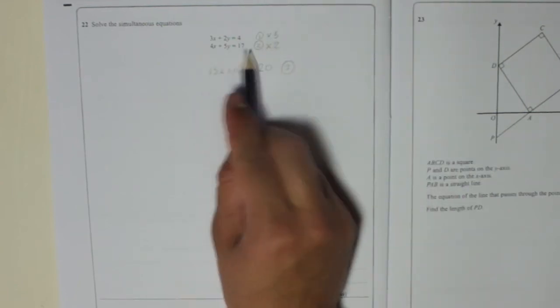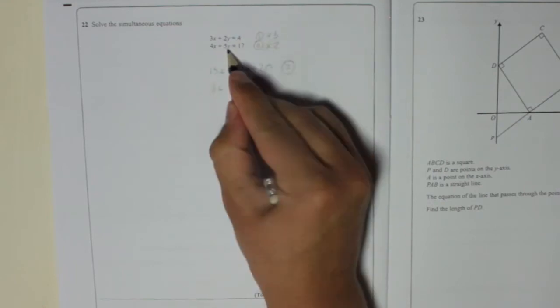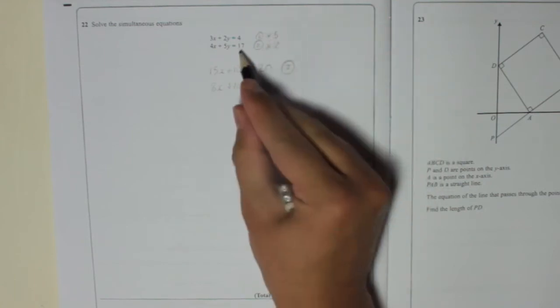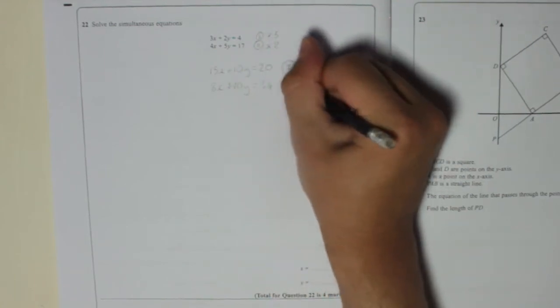Number 2, we're going to times everything by 2. So 4x times 2 becomes 8x. 5y times 2 becomes 10y, which is what we wanted. And then 17 times 2 is 34. And I'll call that line 4.